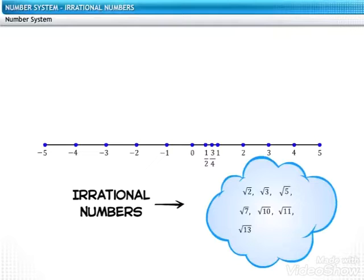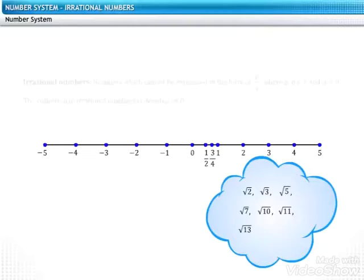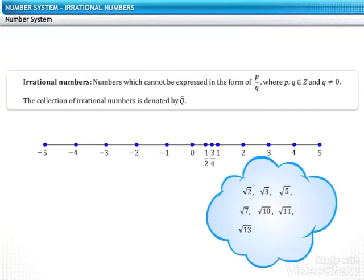Let's read out the formal definition of irrational numbers. Numbers which cannot be expressed in the form of p upon q, where p and q are integers and q is not equal to zero are called irrational numbers. The collection of irrational numbers is denoted with Q bar.